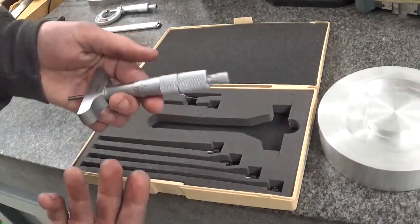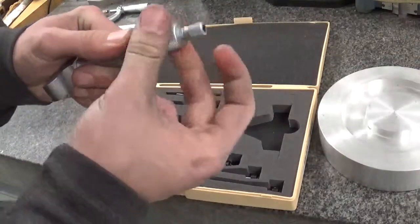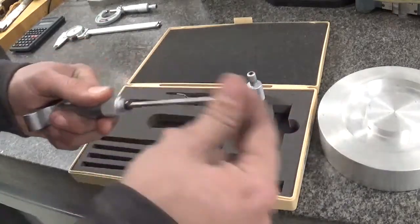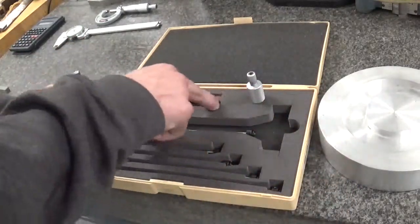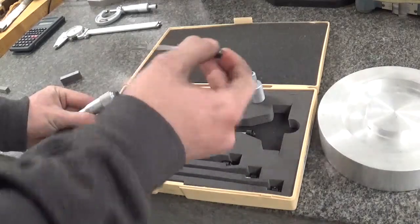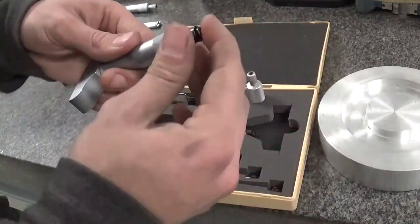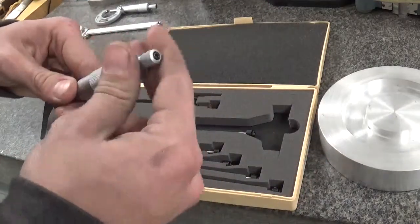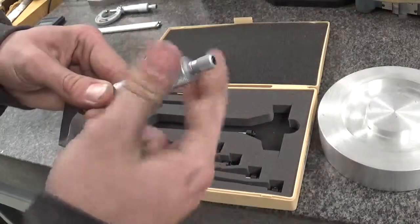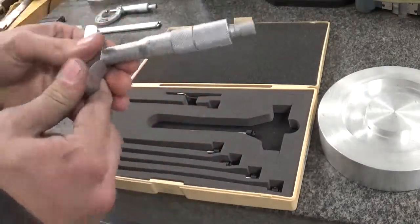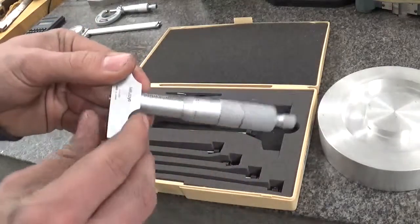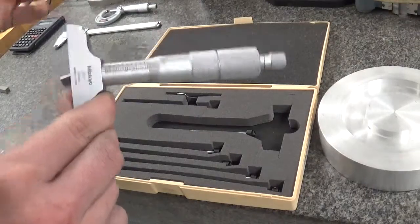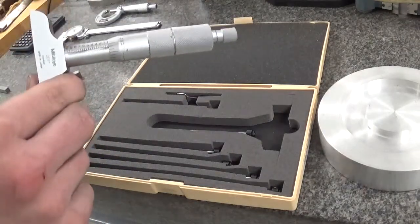To change them, all you have to do is unscrew this, take your rod out, put your desired rod in. I will be taking the 0 to 1 inch, slide it in there, take your cap here and put it back on. There you go—you are not quite done yet though. Before you go here and start taking measurements, you need to calibrate this tool to make sure it's reading accurate numbers.